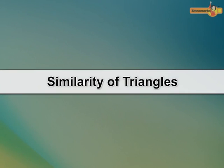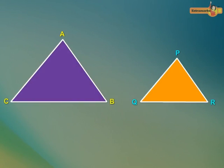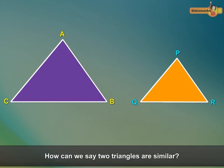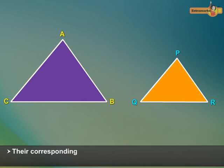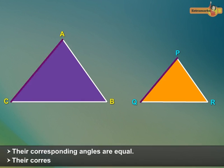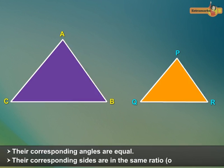Similarity of Triangles. How can we say two triangles are similar? Two triangles are similar if their corresponding angles are equal or their corresponding sides are in the same ratio or proportion.